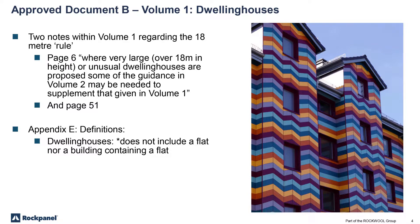Within that document there are actually two notes that refer to the 18-metre rule. Both notes, on page 6 and page 51, send you over to Volume 2 for a little bit more information. The sting in the tail within this particular volume is right at the back in the definitions — Appendix E — where dwelling houses does not include a flat nor a building containing a flat. So if you remember the minimum from the previous slide, it's Euro Class B, S3, D2. That's what you can have on a dwelling house.